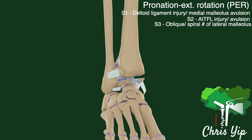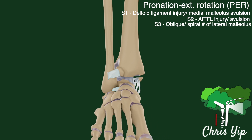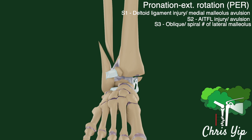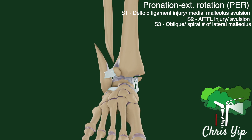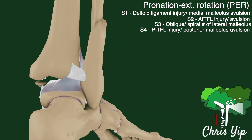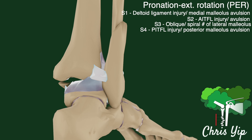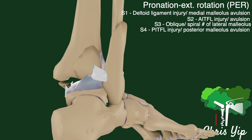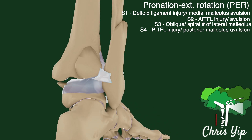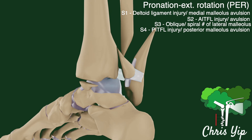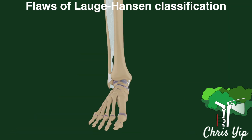The third stage will lead to a high oblique or spiral fracture in the fibula that is proximal to the tibial plafond. In the fourth stage, there will be an injury to the posterior inferior tibial fibular ligament or an avulsion of the posterior malleolus.